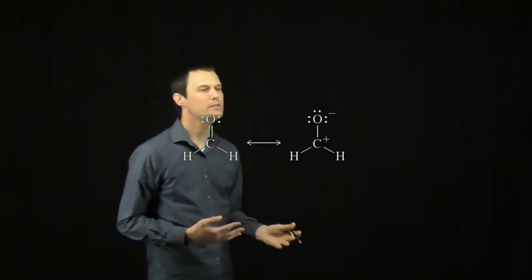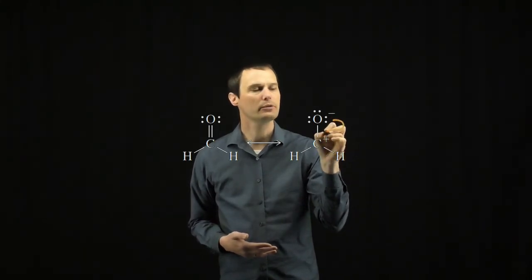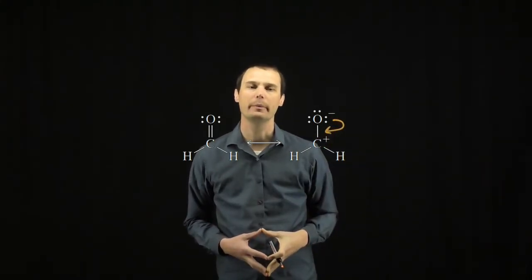We'll start this curved arrow notation at one of the lone pairs on oxygen. We'll take that lone pair and we'll use it to form a new carbon-oxygen double bond.